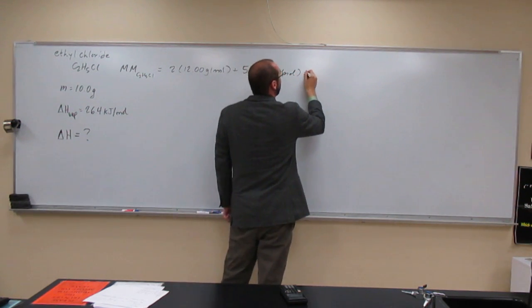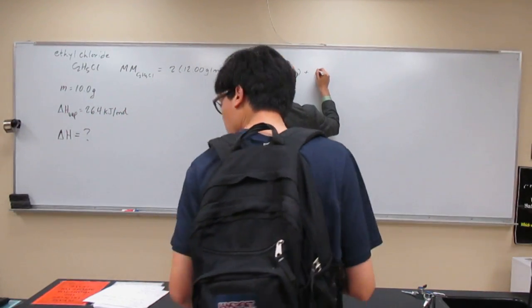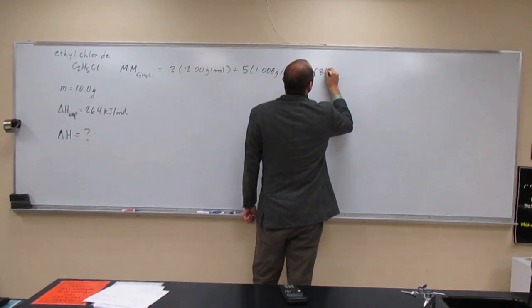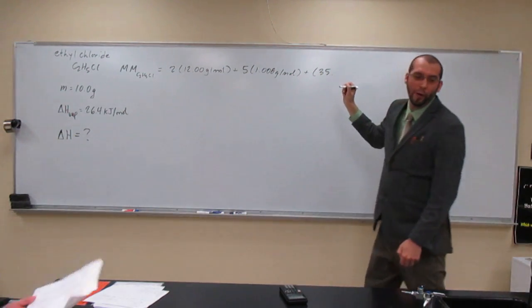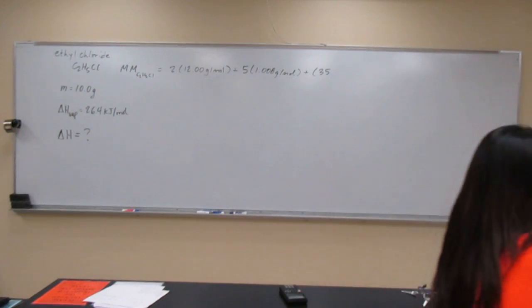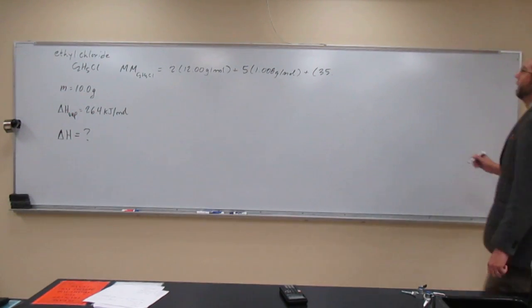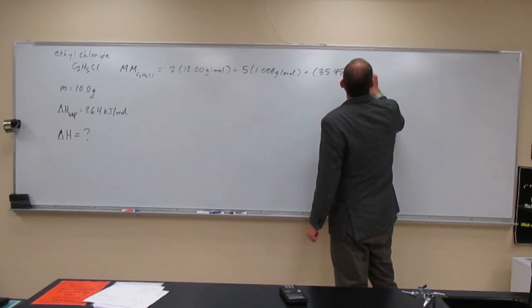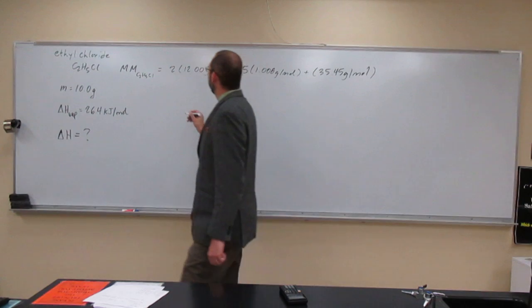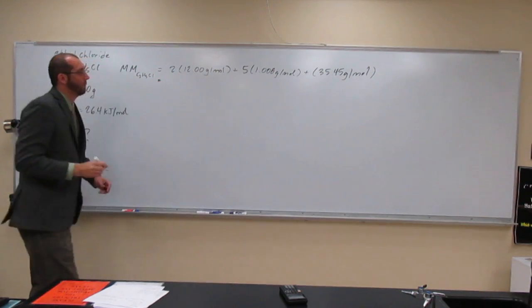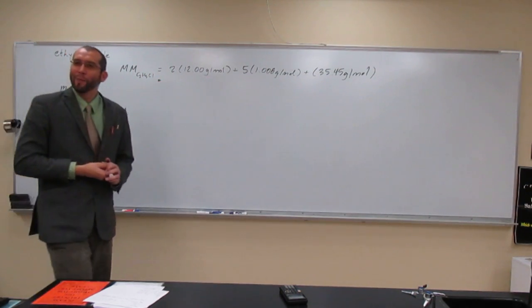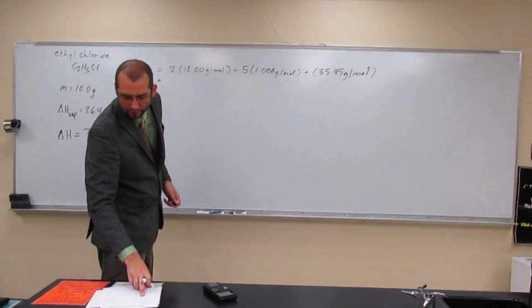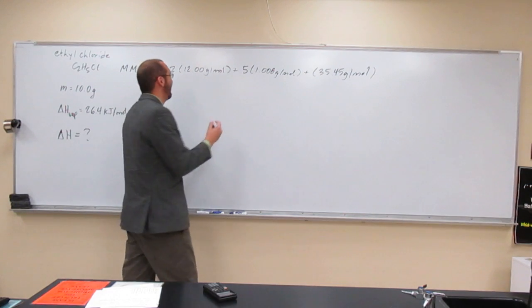And then fluorine is, what, 35 point, help me out, 45 grams per mole. Okay. So, has anybody added that up yet? 64.49. 64.51 is what I mean, okay.